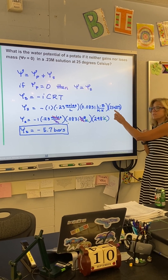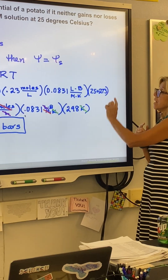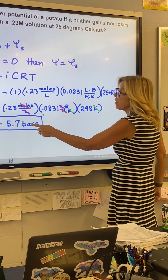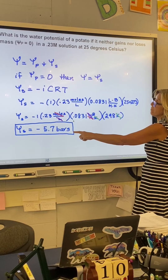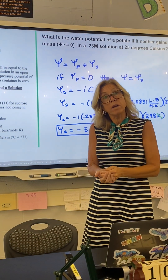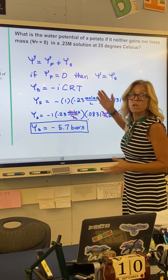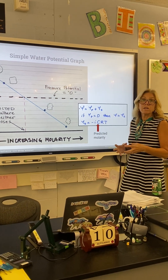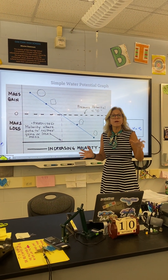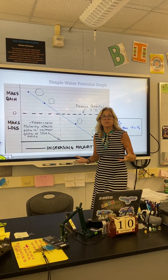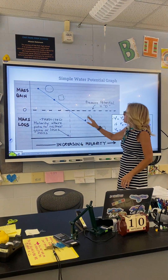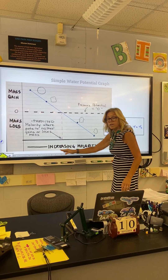When you cancel everything out you're left with bars. In this example the solute potential is negative 5.7 bars, but since we removed the pressure — because the wall was not pushing back — we know that water potential equals solute potential. In our lab we put chunks of potatoes in various molarities: 0, 0.2, 0.4, all the way up to one molar. All of you collected data and we put that in a course shared document, and we noticed some potatoes gained weight and some lost weight over increasing molarity.